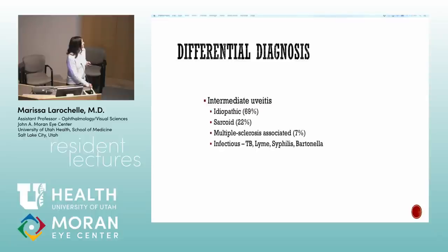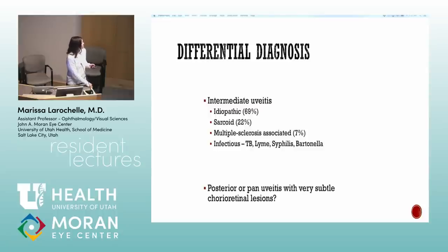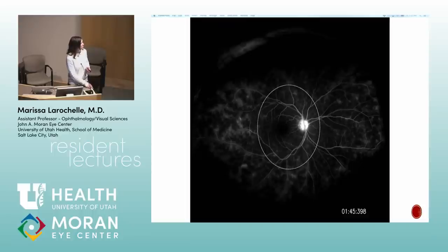You can have neuro-uveitis with syphilis and Bartonella. On FA, without wide-field imaging, the view can look fairly normal; when expanded with wide-field, you see a lot of peripheral retinovascular leakage and a fern-like pattern — that's really classic for intermediate uveitis.